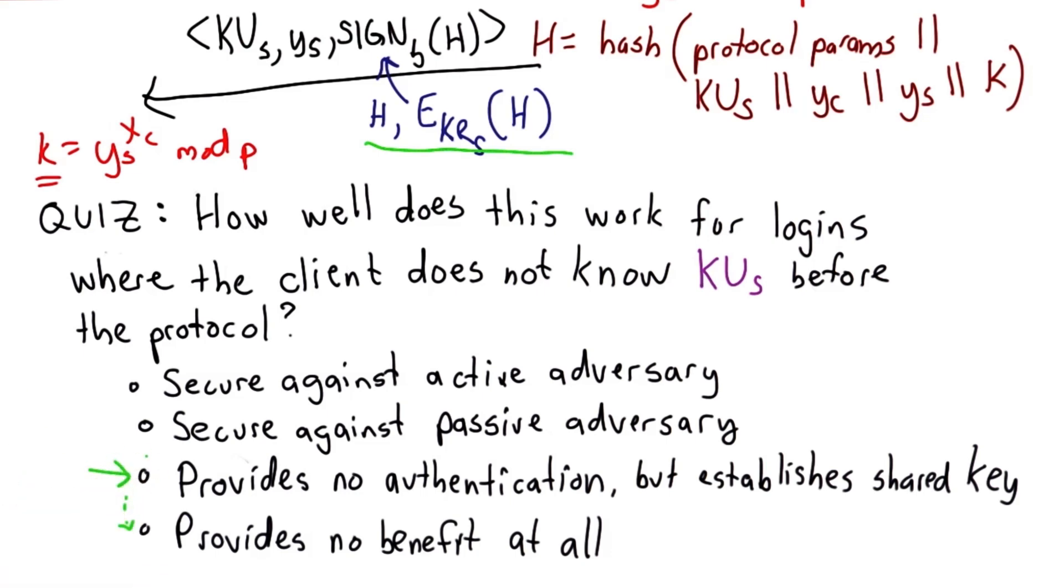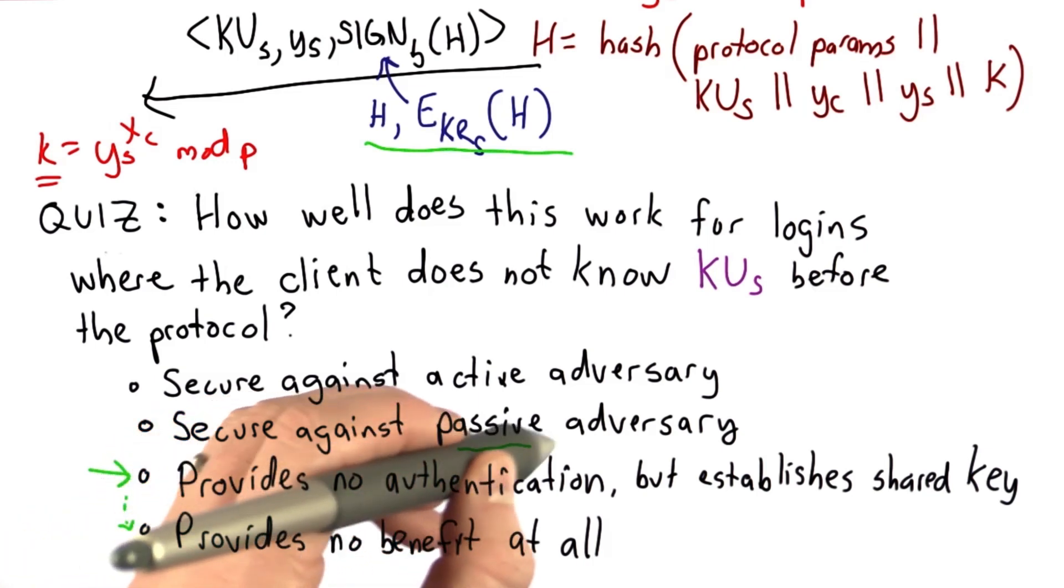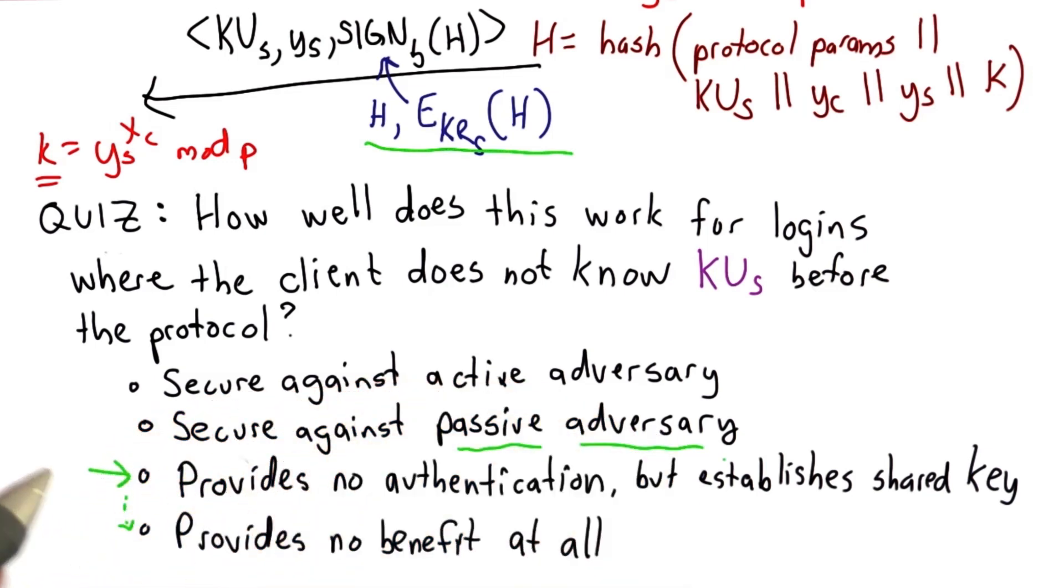But I would say that at least establishing the shared key means now you've got a channel with some entity that's encrypted. If someone is eavesdropping on that channel, so if you're only worried about a passive adversary, they might be able to eavesdrop, but you do have a secure key established. You don't know that it's with the right server.